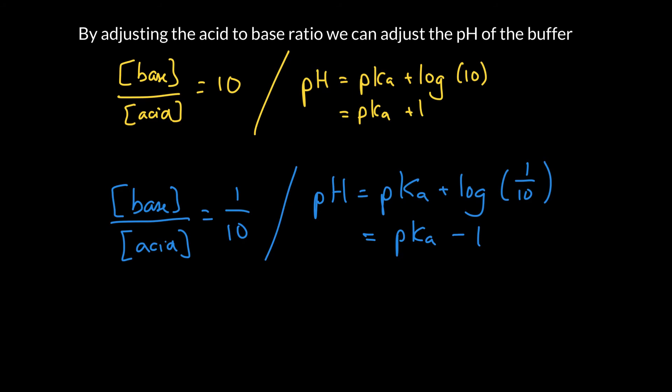So in theory, we can prepare a buffer according to this equation at any pH we like. We just have to adjust that acid-to-base ratio. But in practice, what we find is that if we use too much base or too much acid, then we no longer have a buffer. If we have primarily one component and not the other, that's not really a buffer. And so most of the time, our buffer range is going to be one unit higher or lower than the pKa. So a decent range would have the pH somewhere between pKa minus 1 and pKa plus 1.